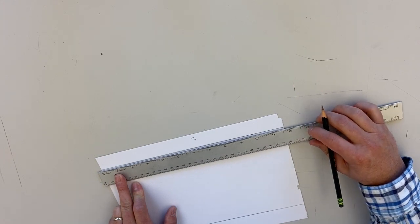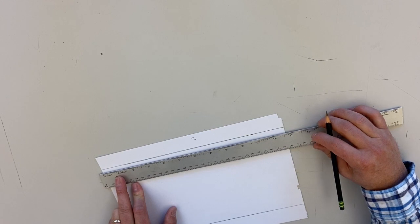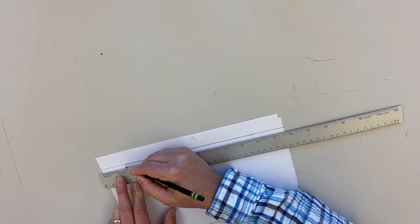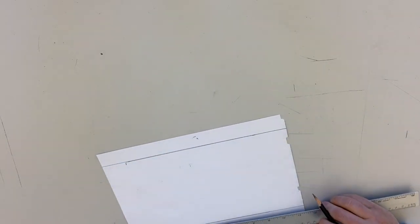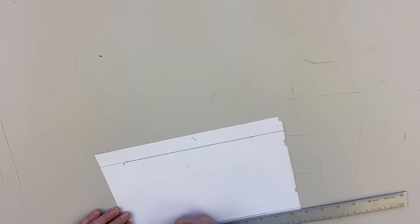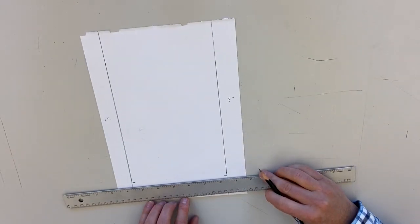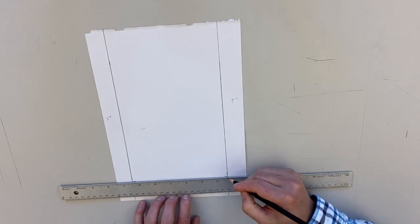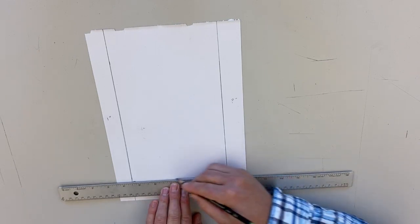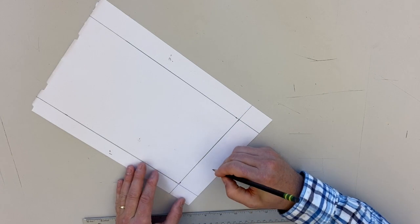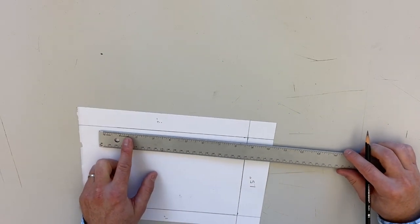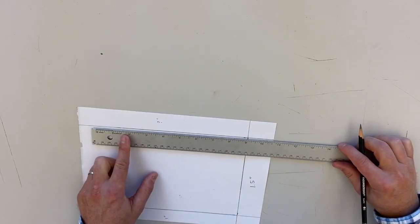Next we're going to be measuring from the bottom of the paper 1 and a half inches and marking that. We're doing the same thing for the bottom as we did for the left side, where we have a known measurement which is 1 and a half inch. And then our top border is going to be whatever's left after we make our 9 inch line for the box.